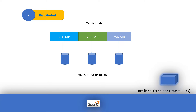The second advantage is distribution, which is important when working with large datasets. For example, if we have one terabyte of data or large files, we chunk the data into blocks. In this example, we have a 768 MB file chunked into 256 MB blocks, and those blocks are distributed across machines — whether underneath HDFS, S3, or block storage. The whole file is divided into three parts stored on different machines.